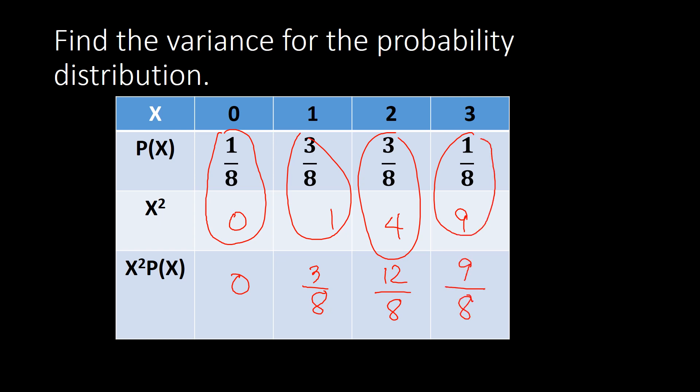Computing x²·P(x): for x=1, that's 0; for x=1, it's 3/8; for x=2, four times three is 12, keeping denominator 8 giving 12/8; and for x=3, nine times one is 9, giving 9/8. Adding these up: 3 plus 12 is 15, plus 9 is 24, over 8, which reduces to 3.